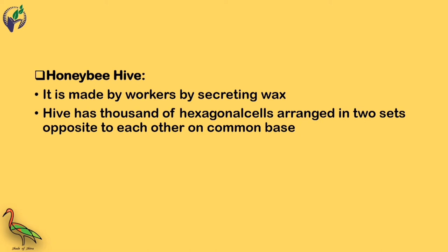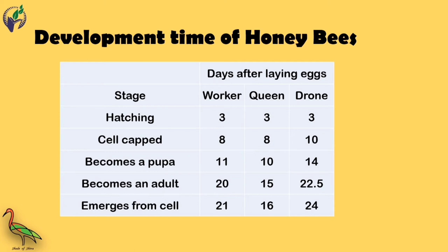This is the development time of honey bees. Pause the video and note down this table, which shows development stages — hatching, cell cap, becoming a pupa, and becoming an adult — for worker, queen, and drone.